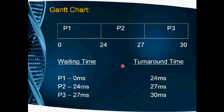Now we need to find the waiting time and turnaround time for each process. For P1, the starting time is 0, so the waiting time is 0 milliseconds. The ending time for P1 is 24, so the turnaround time for P1 is 24 milliseconds.